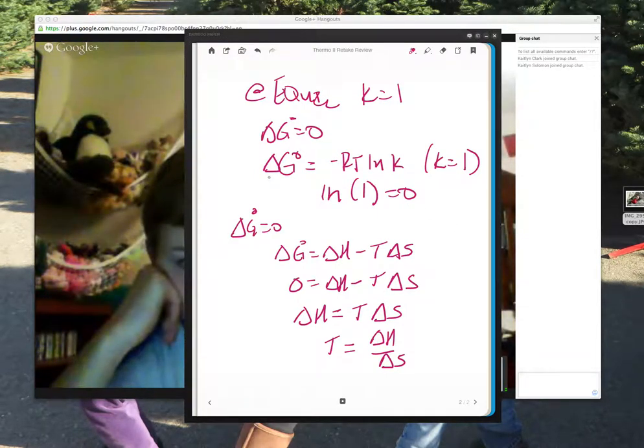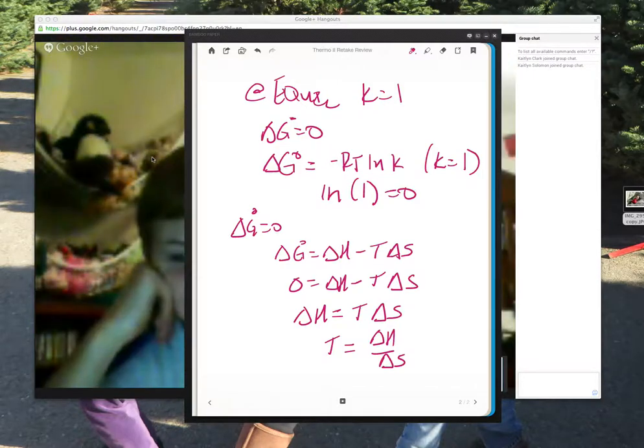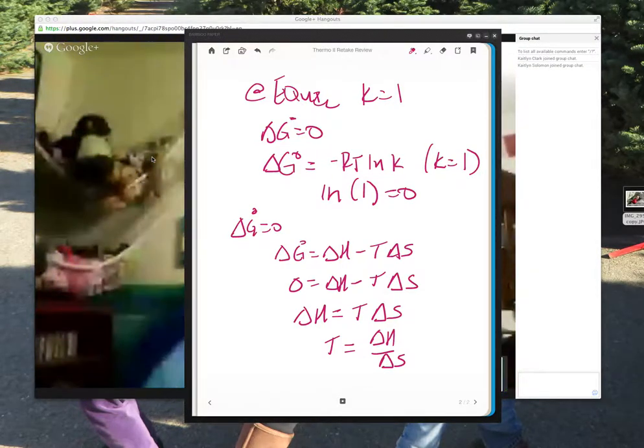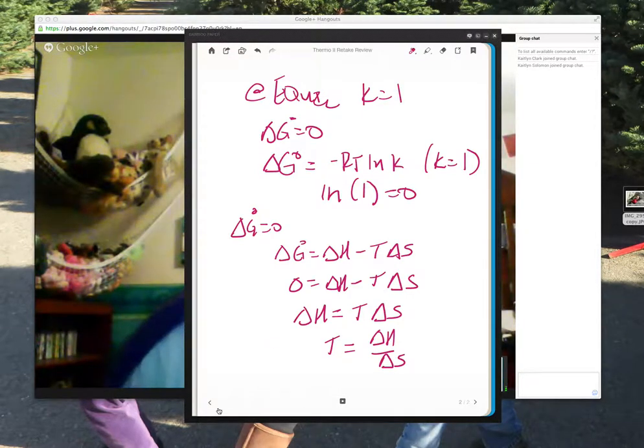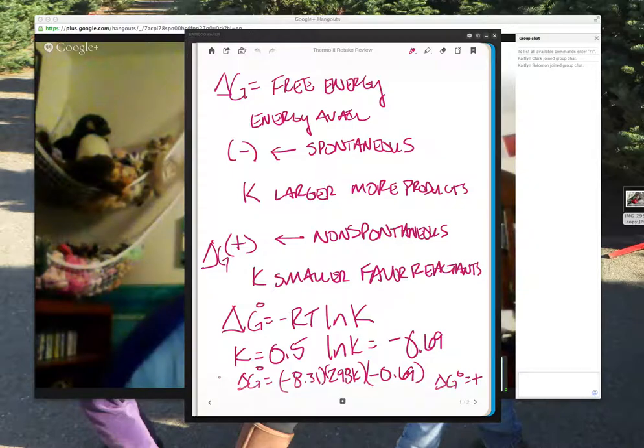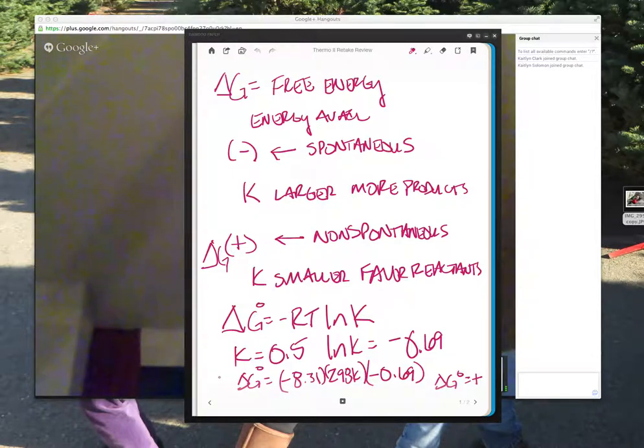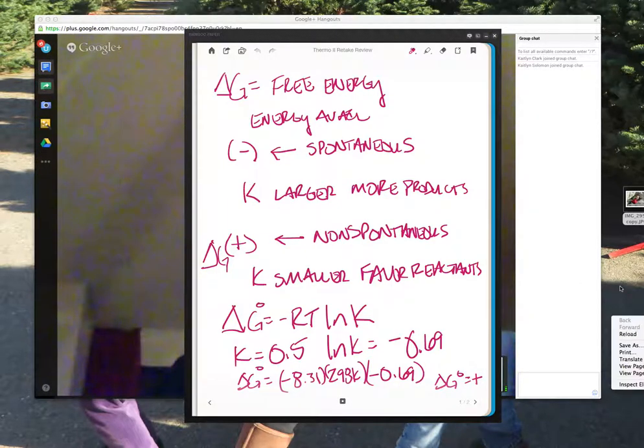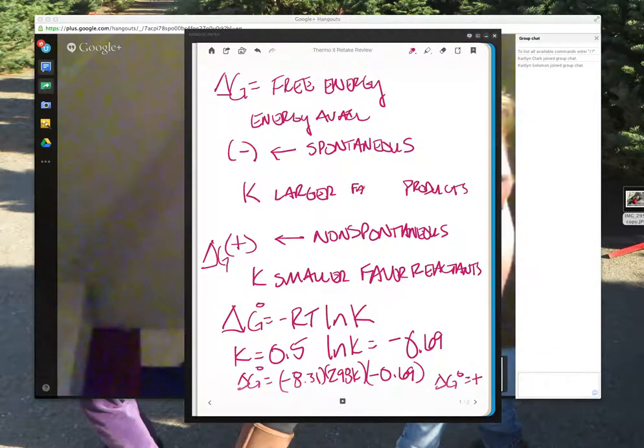It sounded like somebody else joined. Oh, Caitlin Solomon. Yeah, I got to work. Oh wait, right on. It's the two Caitlins. Yes, absolutely. So just to catch you up, Caitlin Solomon, we were talking about the relationship between delta G and K or delta G and equilibrium. Delta G is about free energy and the energy that's available. If delta G is negative, which seems like that's kind of what you want because then it's spontaneous, it's going to go forward. K is larger. It favors the products.